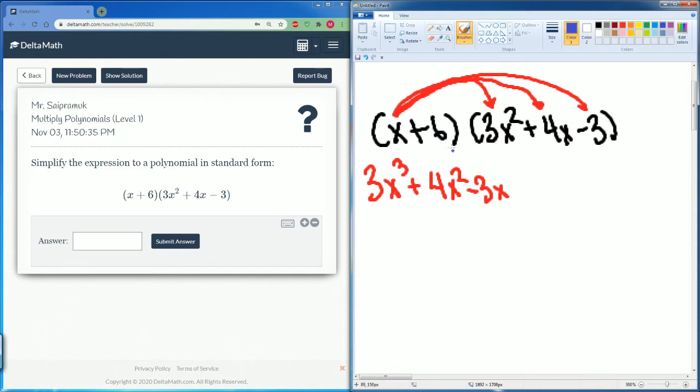Now we do it to the 6. 6 distributed to the 3x squared, so this is going to be plus 18x squared. Then 6 times 4x, which is 6 times 4 is 24, so this becomes 24x. Then 6 times negative 3 gets you negative 18.